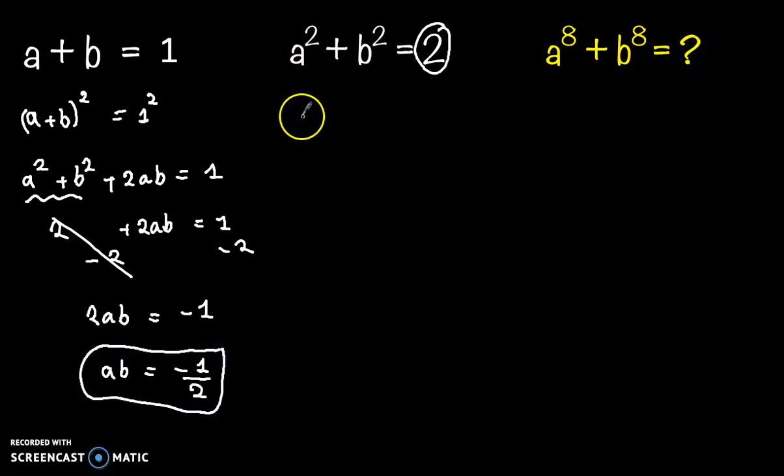Now let's find (a² + b²)² - we will square both sides. It's equal to 2². Expand it. So we have a⁴ plus b⁴ plus 2a²b² equals 4.